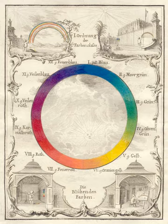These confusions are partly historical, and arose in scientific uncertainty about color perception that was not resolved until the late 19th century, when the artistic notions were already entrenched. However, they also arise from the attempt to describe the highly contextual and flexible behavior of color perception in terms of abstract color sensations. Many historical color theorists have assumed that three 'pure' primary colors can mix all possible colors, and that any failure of specific paints or inks to match this ideal performance is due to the impurity or imperfection of the colorants.